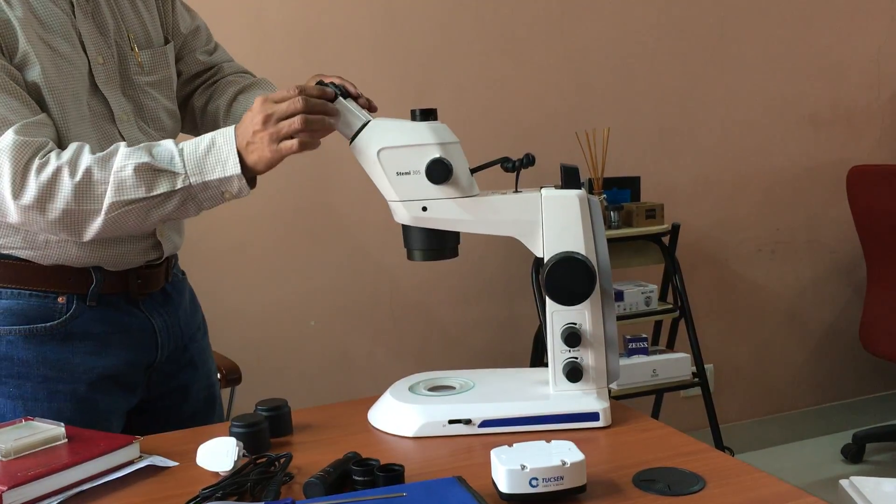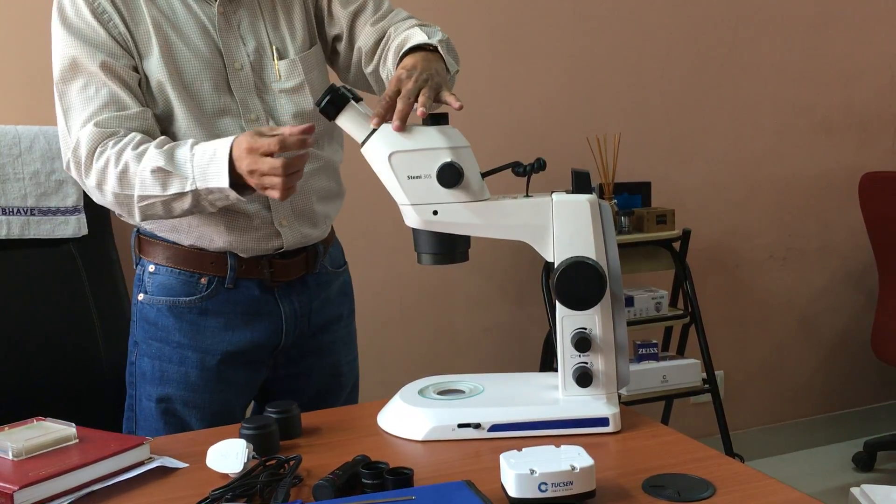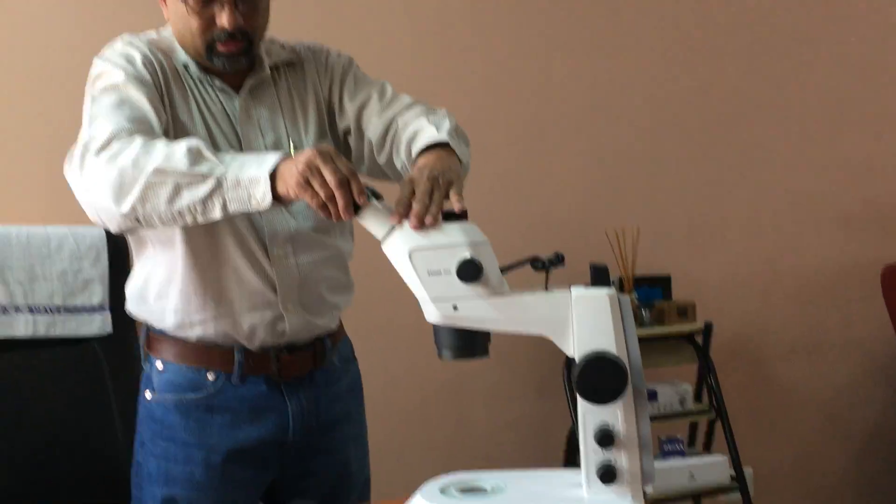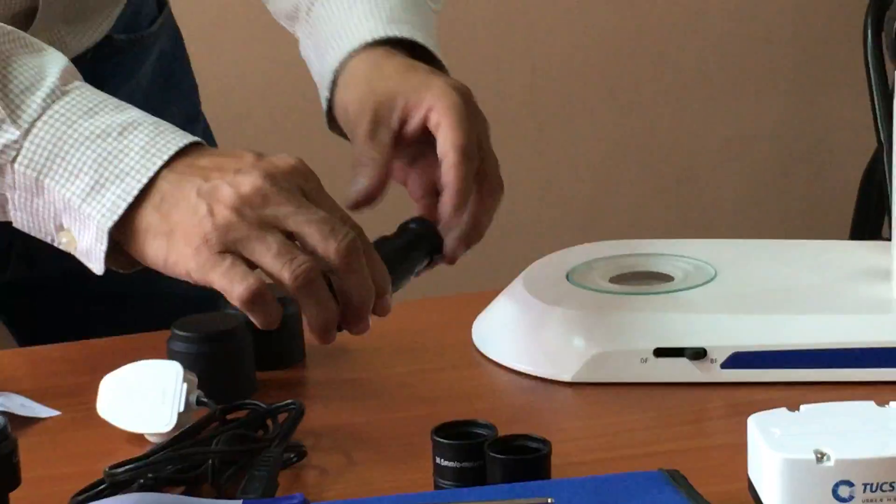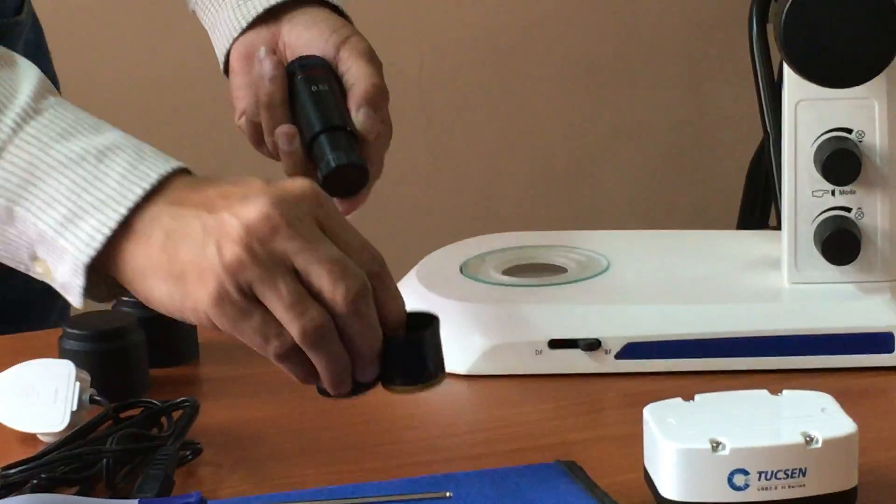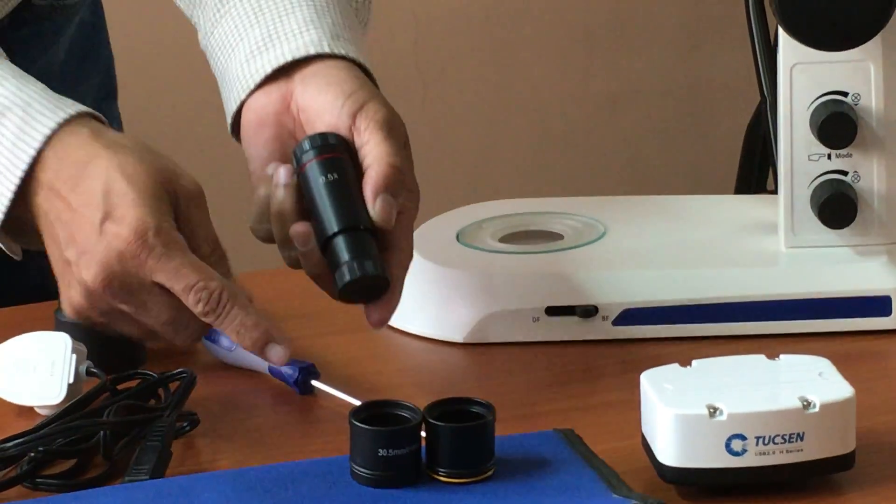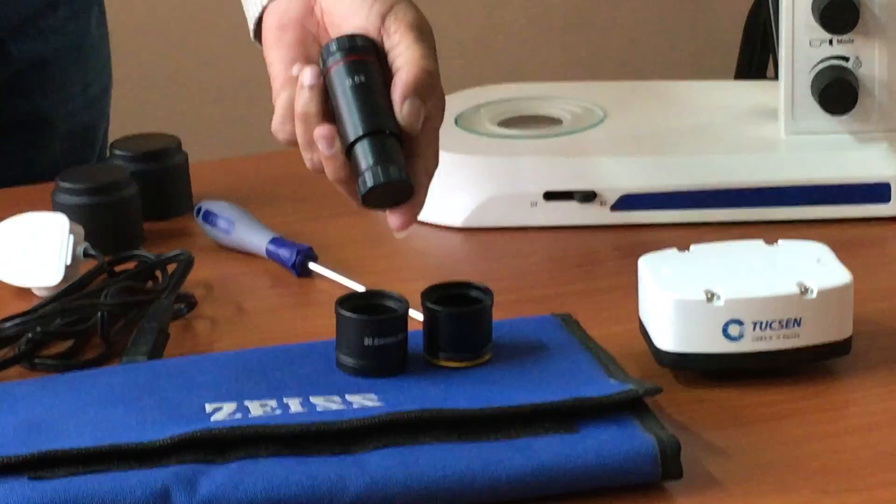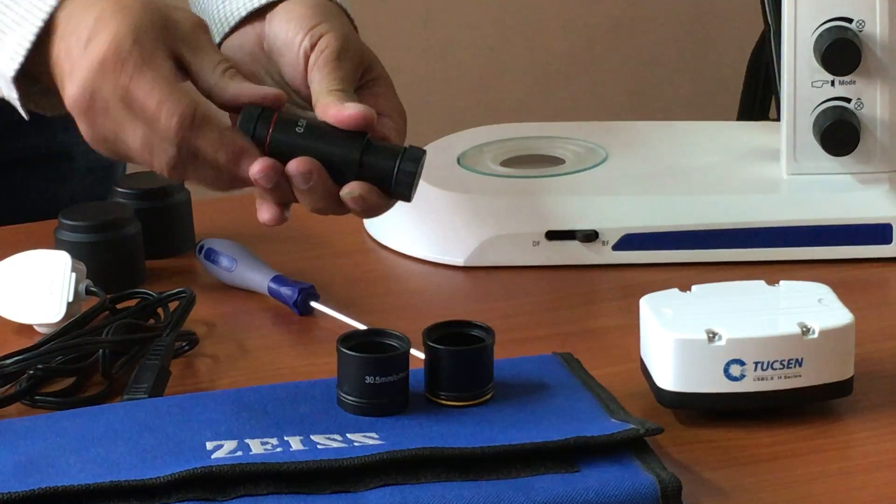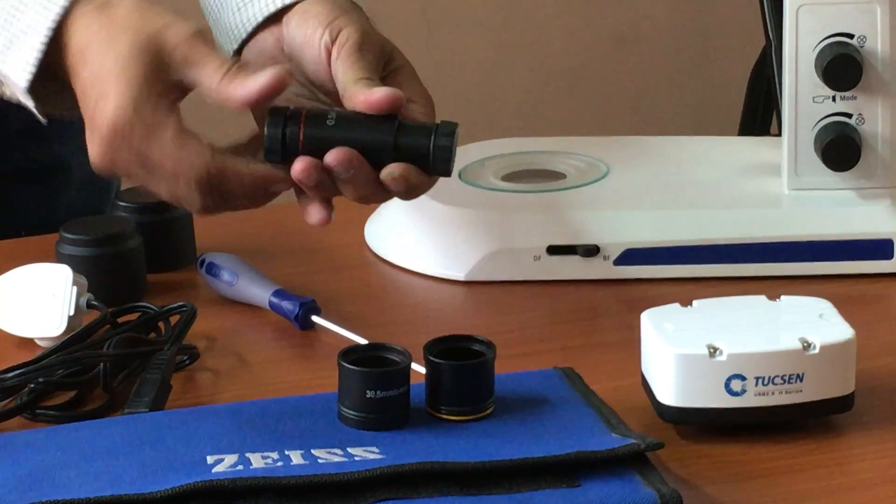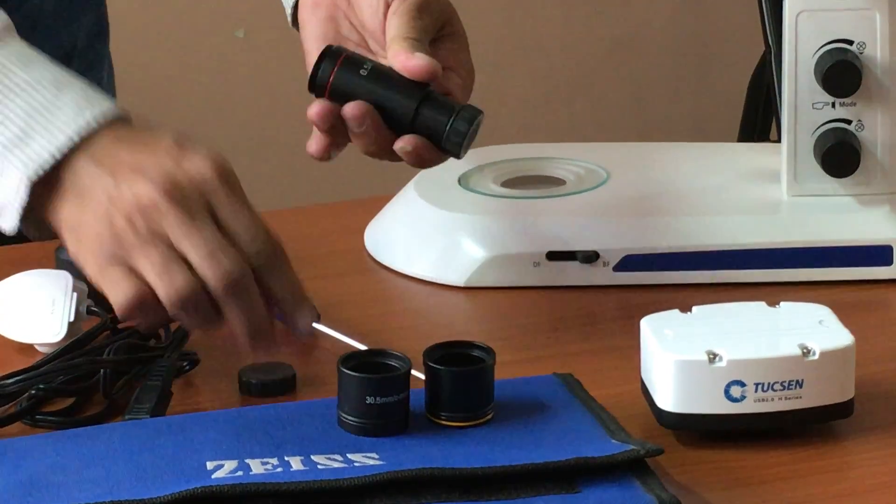We now remove the eyepiece. Either of the eyepieces can be removed. We have three pieces for inserting into the eyepieces. This is the main adopter. Screwing the main adopter to the camera first.